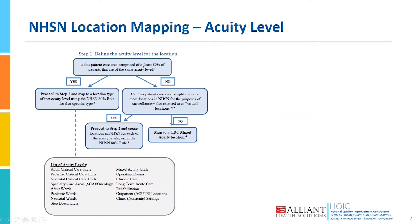If it's not 80% — maybe you have a 60-40 split and they're not in the same acuity level — then you're going to look at whether you can set up a virtual location. That would mean you're able to differentiate patient acuities and place them into virtual buckets, such as critical care and an adult ward. If you're not able to split them into a virtual location, then you will map it as a mixed acuity location.